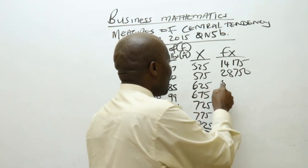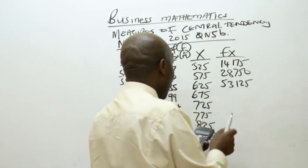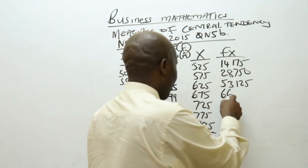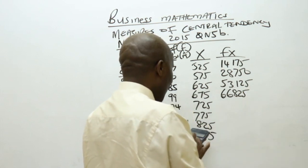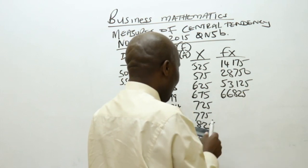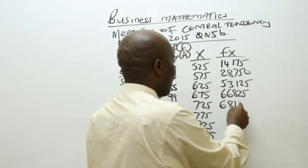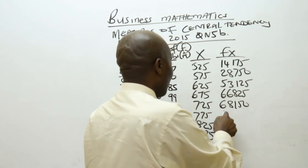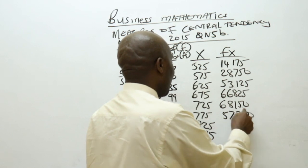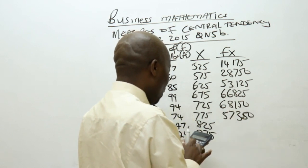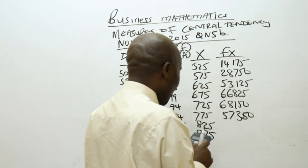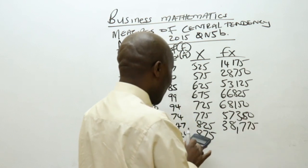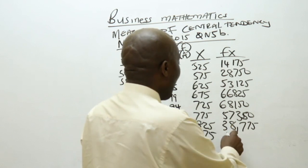Then 99 times 675, which gives us 66,825. Then 94 times 725, which gives us 68,150. Then 74 times 775, which gives us 57,350. Then 47 times 825, which gives us 38,775. And then 24 times 875, which gives us 21,000.